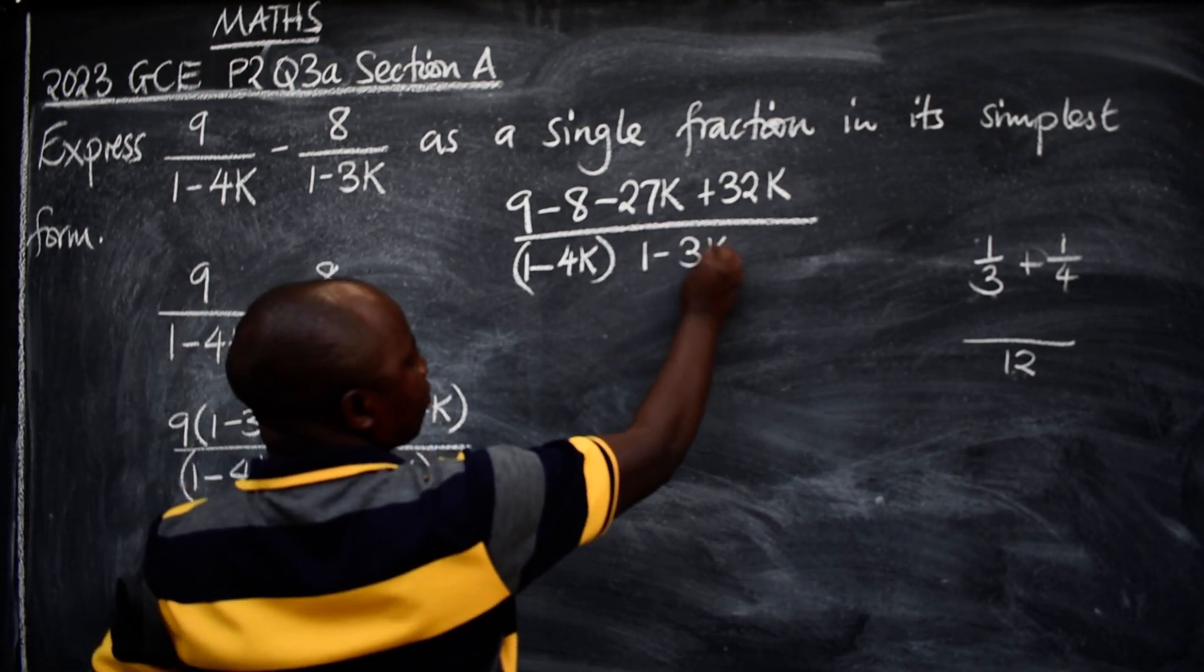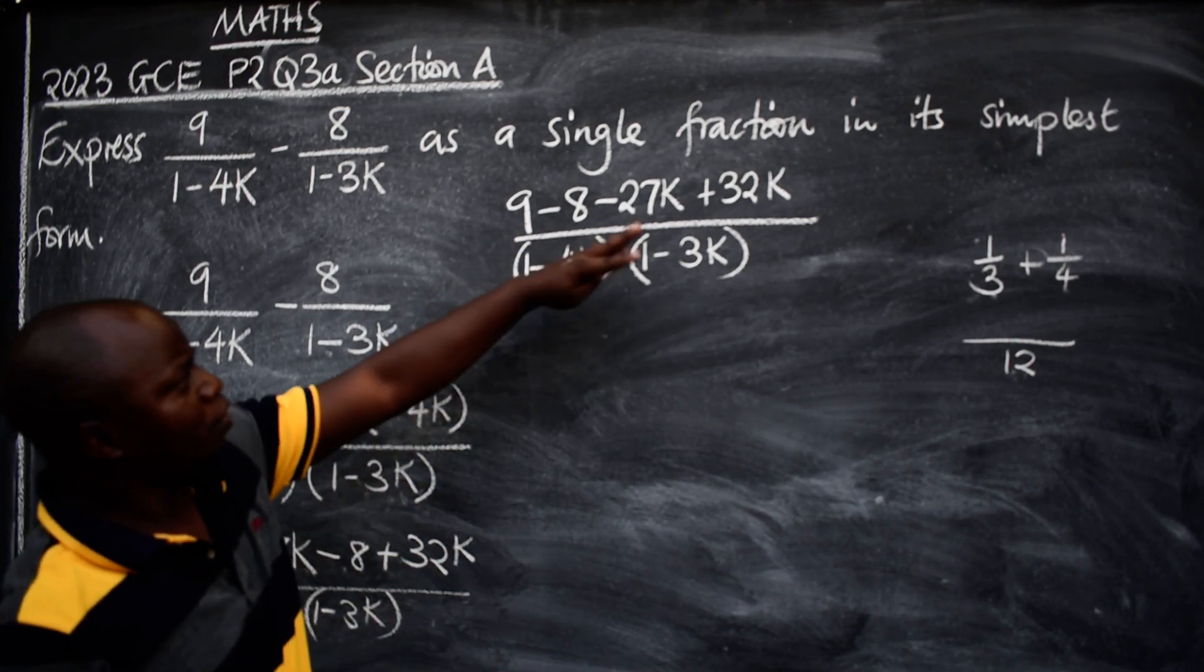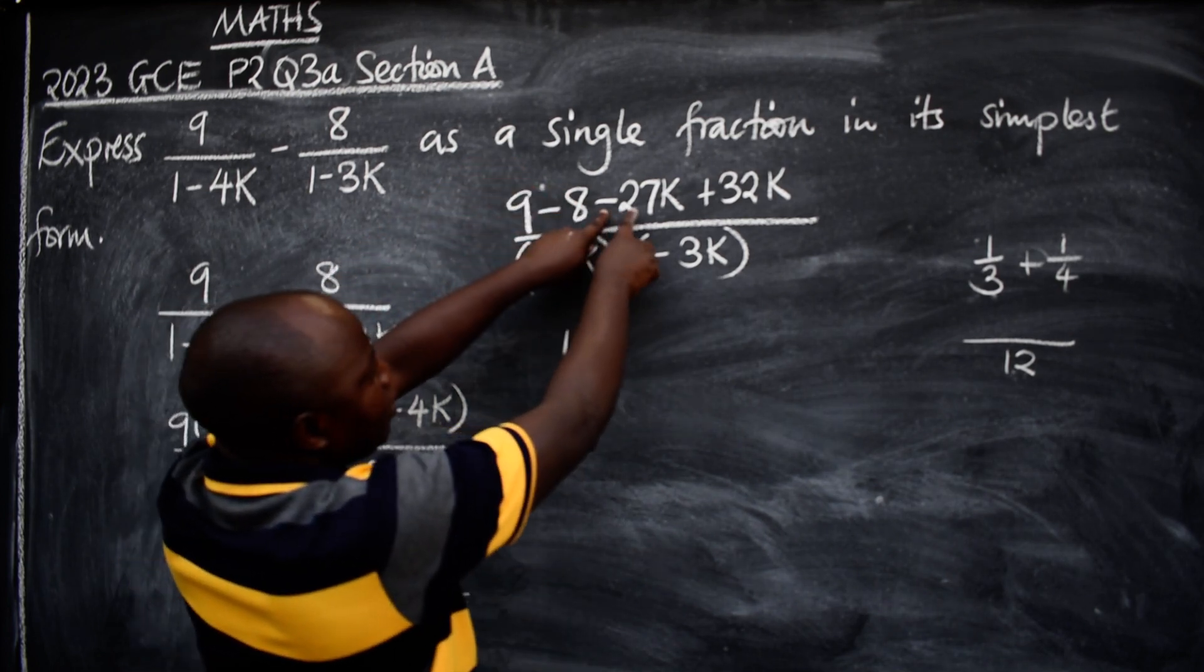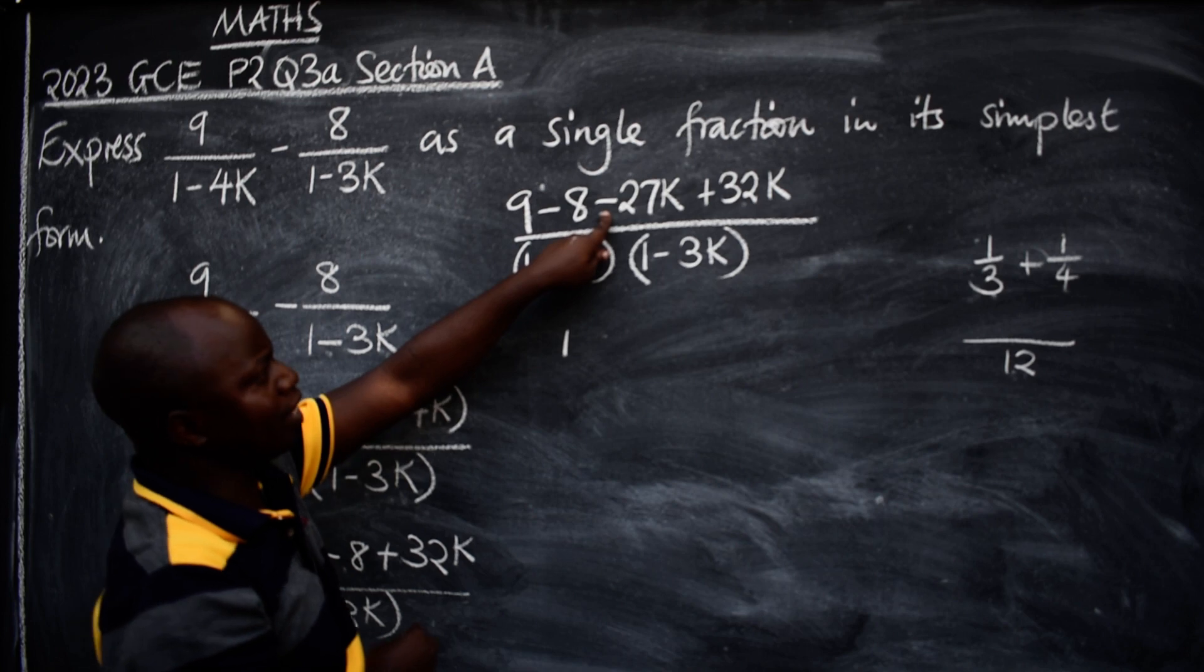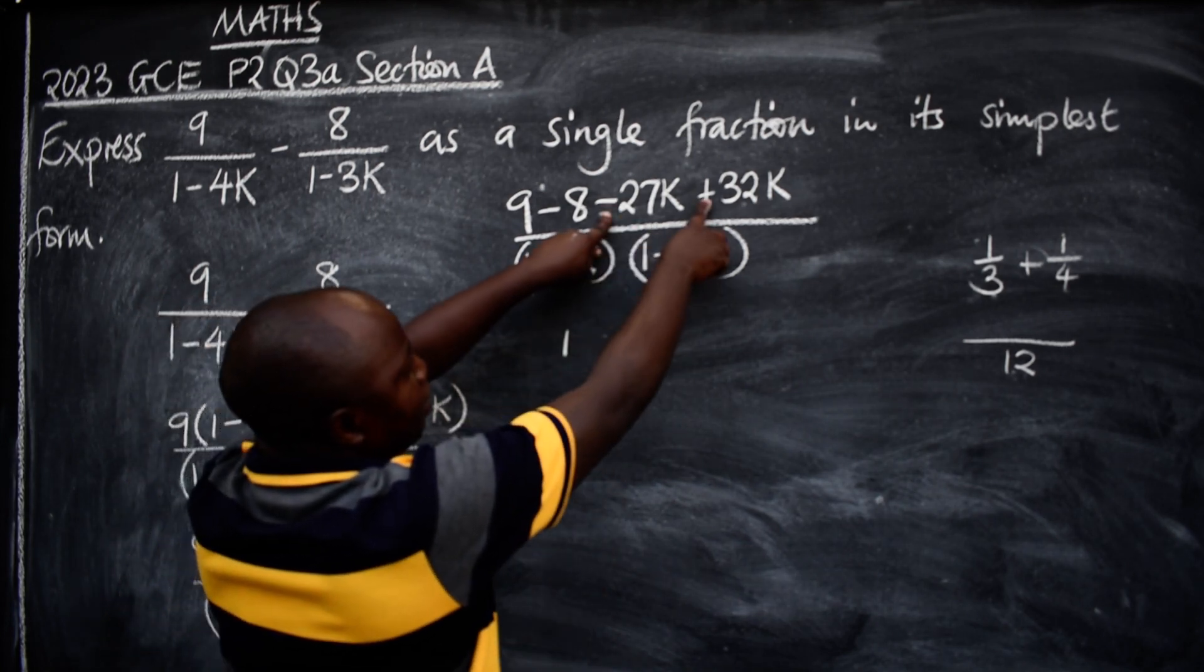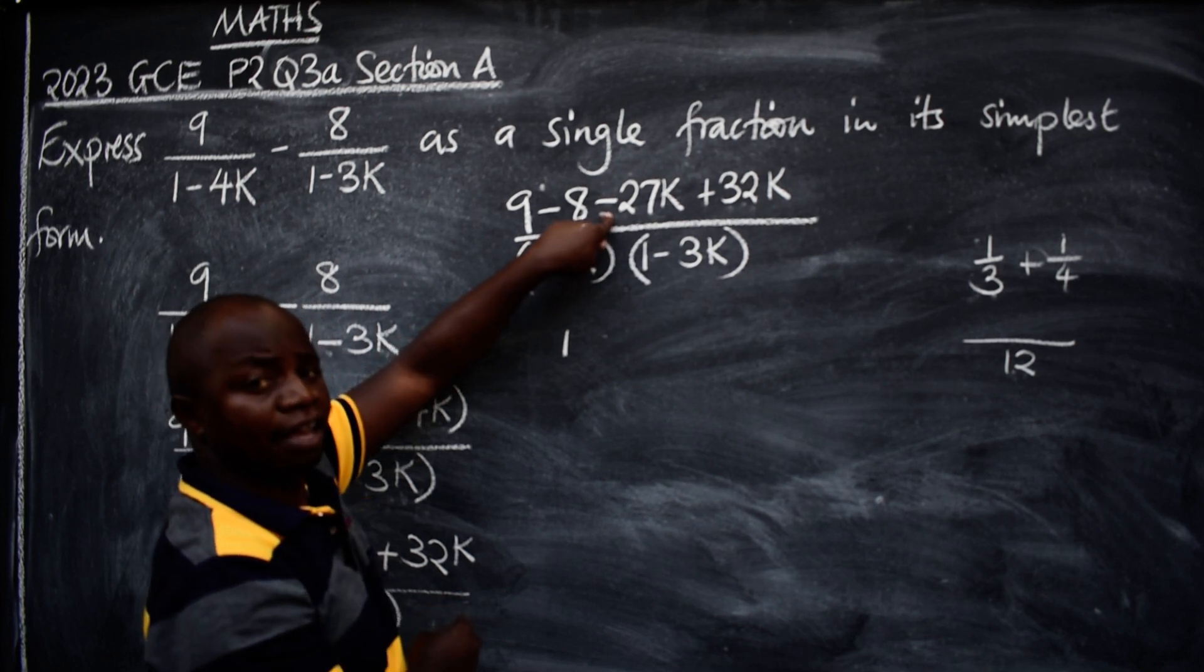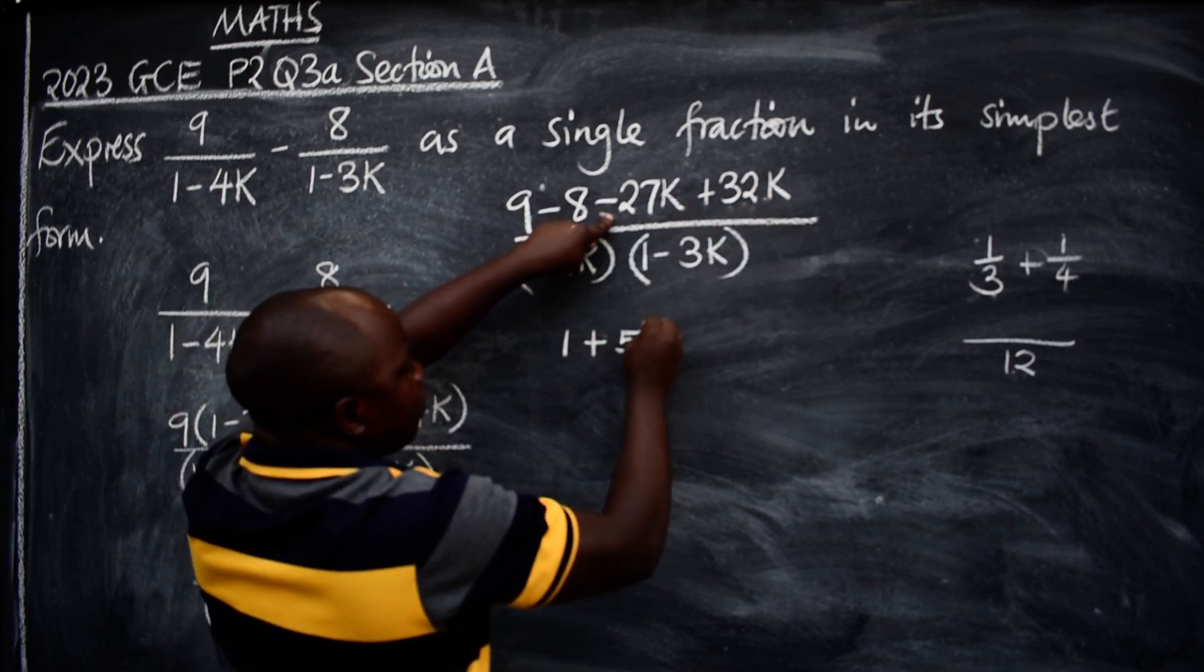Next, on top, 9 minus 8 will give us 1. Then negative 27 plus 32, what answer we're going to get there? Different signs, subtract: 32 take out 27 is 5. So we have plus 5k.